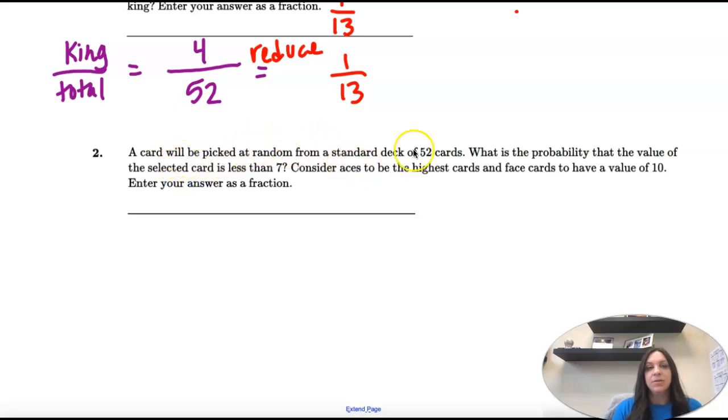Number two: A card will be picked at random from a standard deck of 52 cards. What is the probability that the value of the selected card is less than seven? Consider aces to be the highest card and face cards have a value of 10.